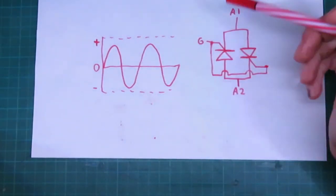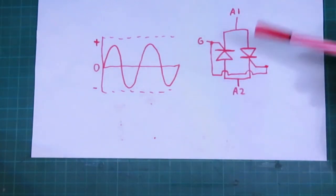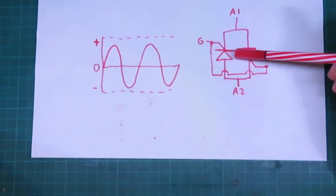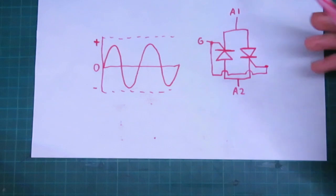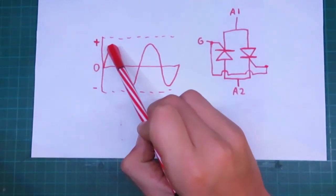So, why that is happening, is as soon as you disconnect the signal from the gate, what happens is, the SCR is still on, actually. So, let's say, you get current flowing from anode 2 to anode 1 through this SCR in our triac, and it's on this positive peak, so it's going up to the positive peak.